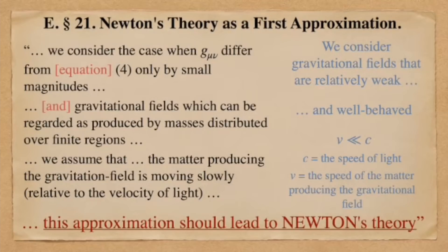In black on the left-hand side of this slide is the text from the translation of Einstein's paper — I've omitted some technical details but kept what is salient. In blue on the right-hand side is the simplified version. Einstein considers the case of a weak, analytically well-behaved gravitational field produced by matter moving slowly compared to the speed of light, and suggests that plugging these approximations into his theory should produce Newton's theory.